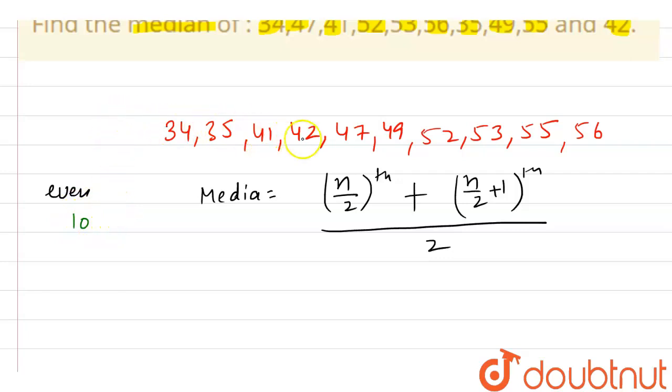So the fifth term is 47, plus the sixth term which is 49, and this whole divided by 2.